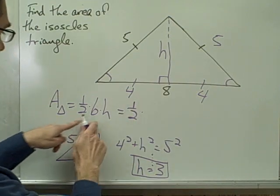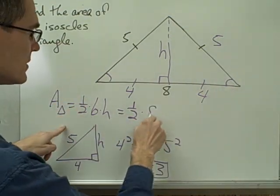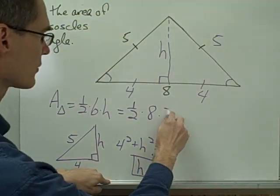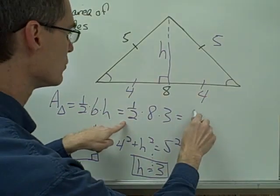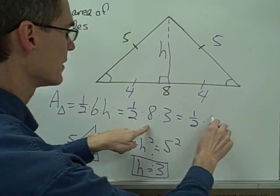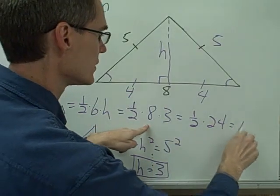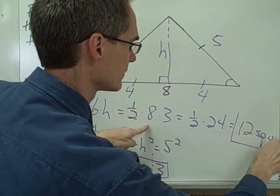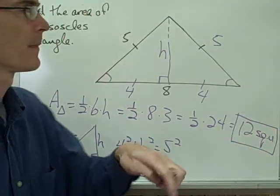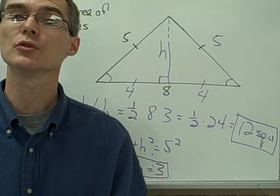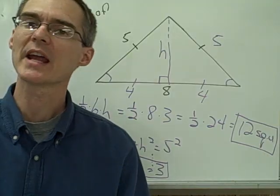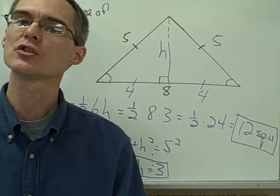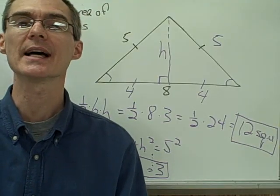Now I can plug those numbers in and find the area of my isosceles triangle: one-half times the base of 8 times the height of 3. That gives me one-half times 24, which is 12 square units. You have some other examples in your notes in which you're asked to find the areas of isosceles and equilateral triangles — I'm going to let you finish those, and we'll take a look at them in class tomorrow.